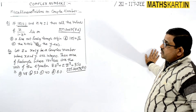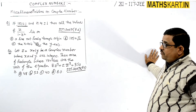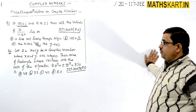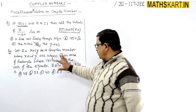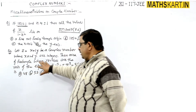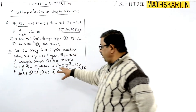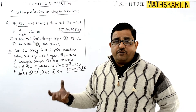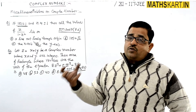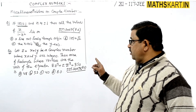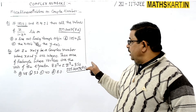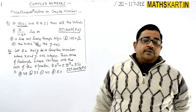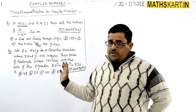Second question: Let z equal x plus i·y be the complex number where x and y are integers. Then find the area of the rectangle whose vertices are the roots of the equation z̄·z³ plus z·z̄³ equals 350. We will solve this equation and the roots will give us the vertices of the rectangle.